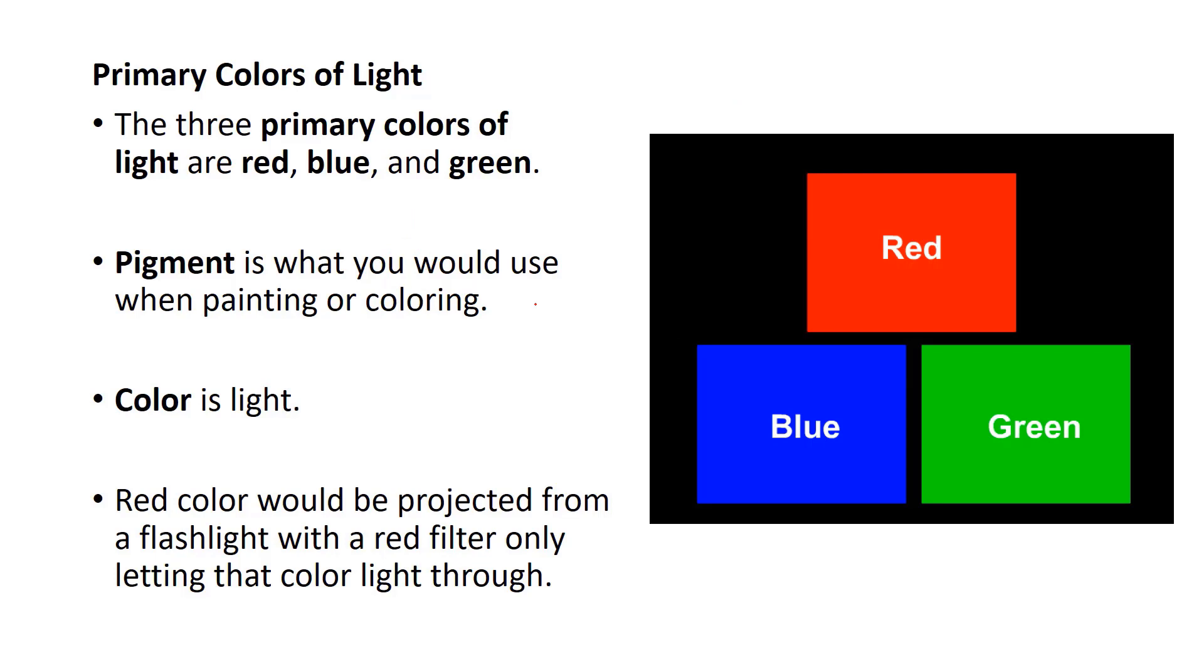Three primary colors of light are red, green, and blue. Now, some art classes call them other things. You're probably talking about pigment. When I'm talking about color, I'm talking about light. And light is something that would be projected from if you had a flashlight that had like a red filter, a red screen on front of it. You turn on that flashlight and you'd see red. That's color red.